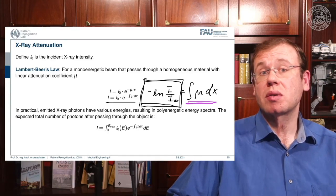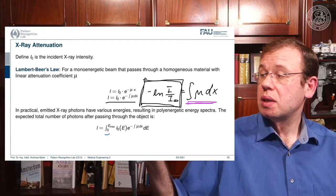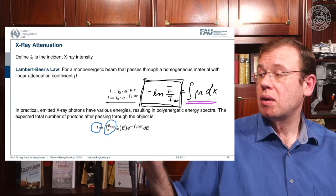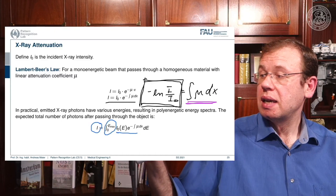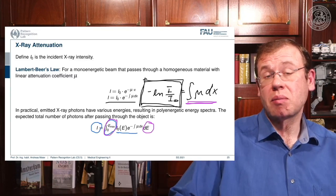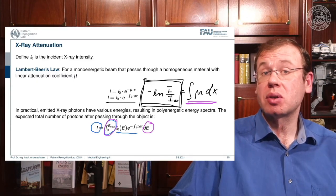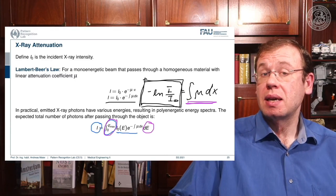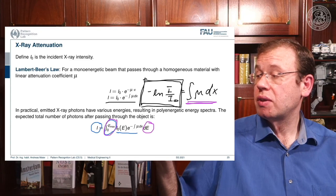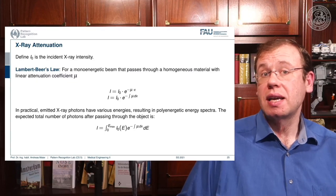Another reason computed tomography is not straightforward is that we have many different energies. The intensity is not just dependent on the simple Beer-Lambert law but is embedded in an integral over energies, and this complicates most reconstruction formulas. We then have to use different solution strategies to compensate for the energy dependence. We'll look into the multi-energetic nature of x-rays in more detail in later videos.